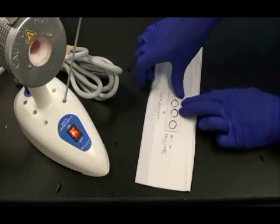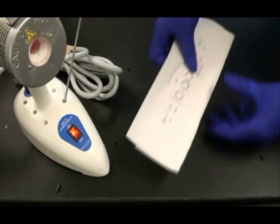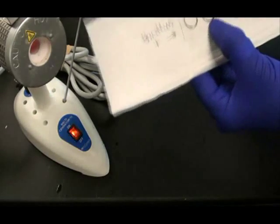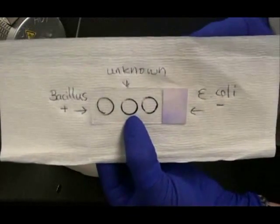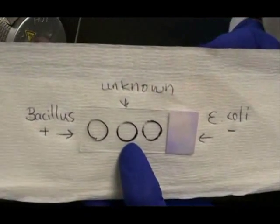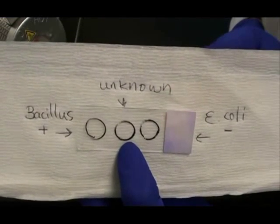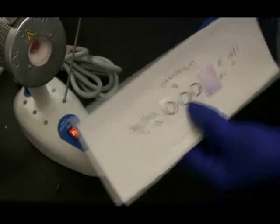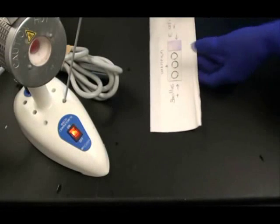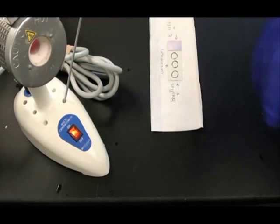You may want to label a paper towel with the names of the samples that you'll be putting onto your slide. I'm going to put Bacillus, an endospore producer on the left. E. coli, a non-endospore producer on the right. And my unknown in the center.